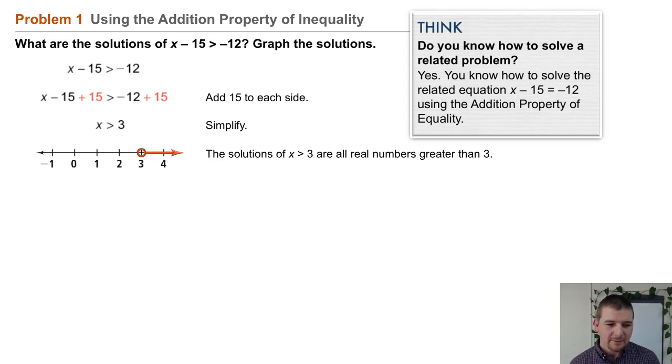To graph that, relying on some things we learned during the last lesson, we'll use an open dot at 3 because we're not including the value 3 in our solution set. But we are including all real numbers greater than 3, so the arrow points to the right.